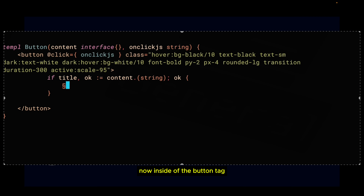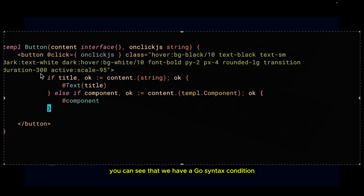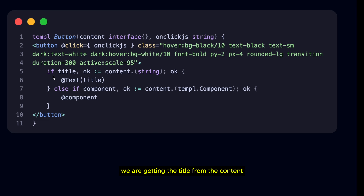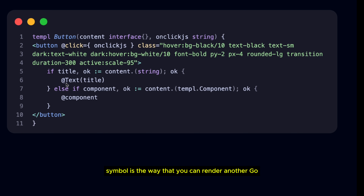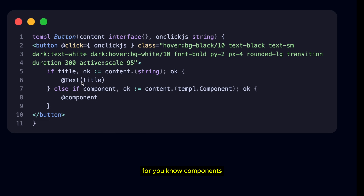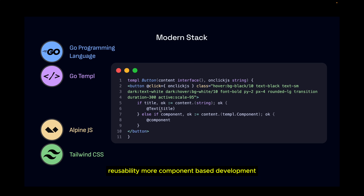Inside the button tag you can see a Go syntax condition. We are getting the title from the content — if the content is of type string, you get the title out of that string which will be the actual content. Then you can render another component using the @ symbol, which is how you render another Go Temple component inside your current Go Temple component.